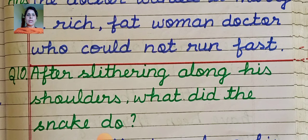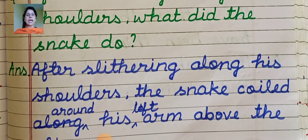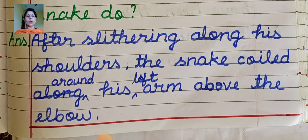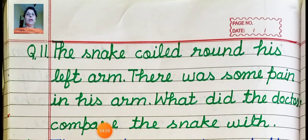After slithering along his shoulders, what did the snake do? After slithering along the narrator's shoulders, the snake coiled around his left arm above the elbow — jaise writer ke kandhon se slithering hote hue snake ne undile bana li unki baanh ke oopar.